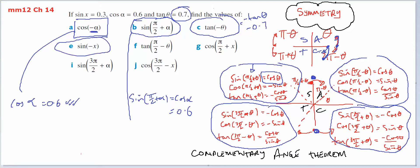In example E: sine of minus x. Minus x is in the fourth quadrant. Sine will be negative in the fourth quadrant, so it's equal to negative sine of x, and sine of x is 0.3, so it's equal to negative 0.3.